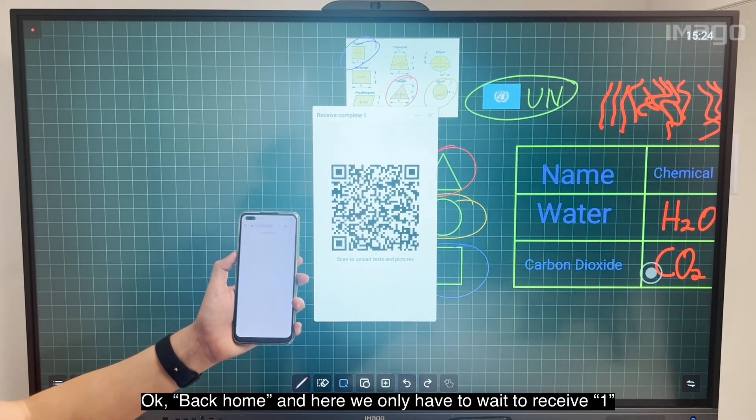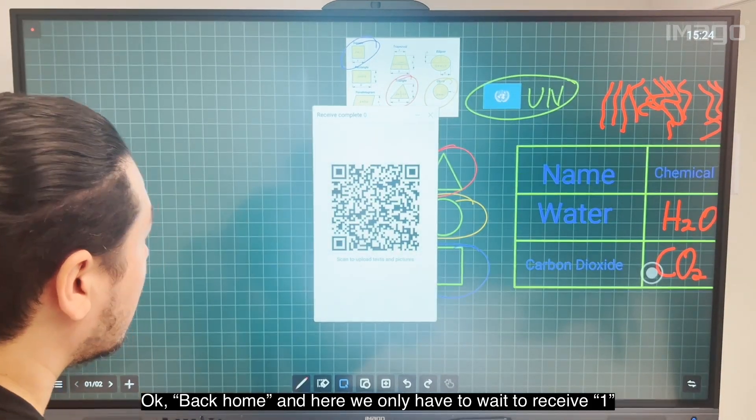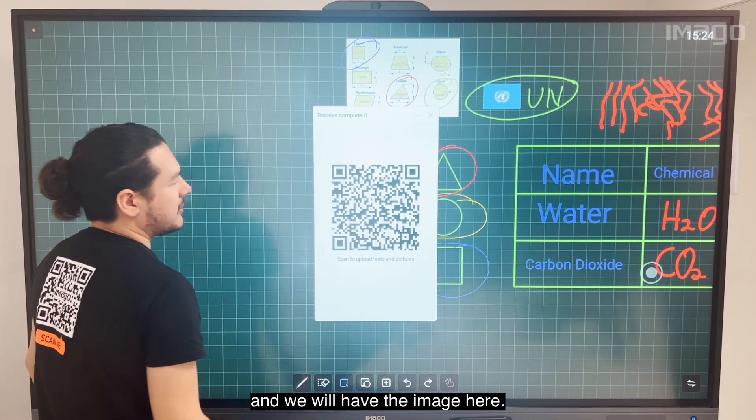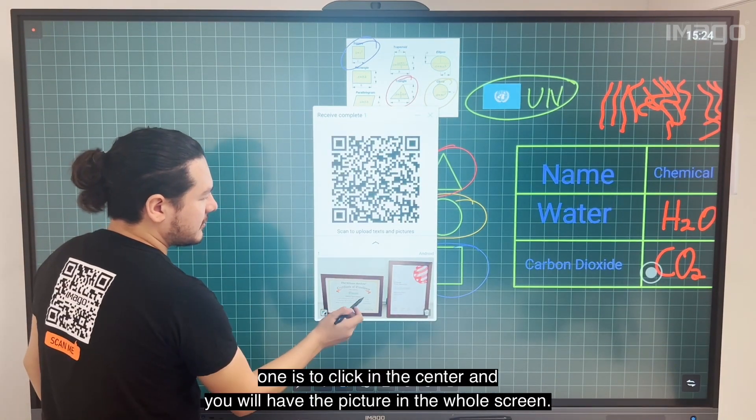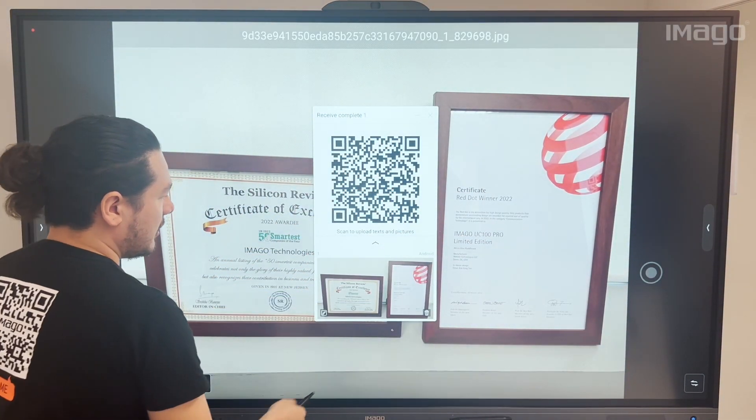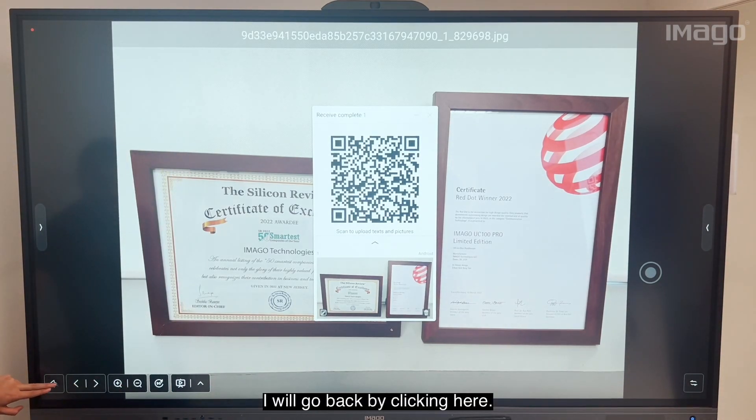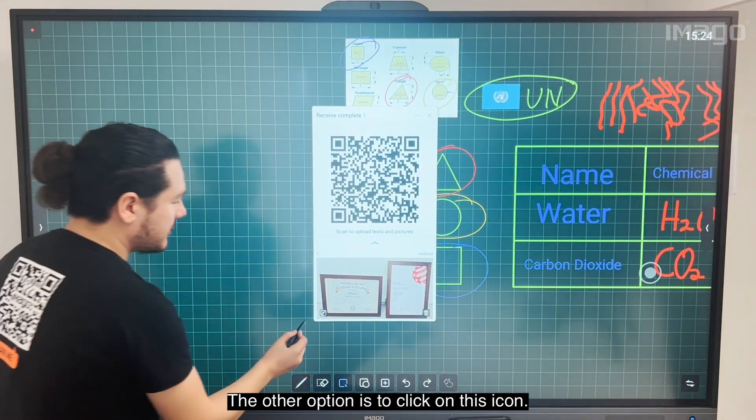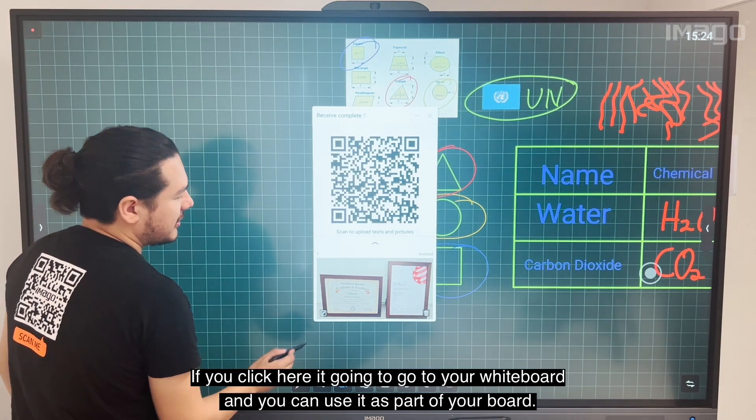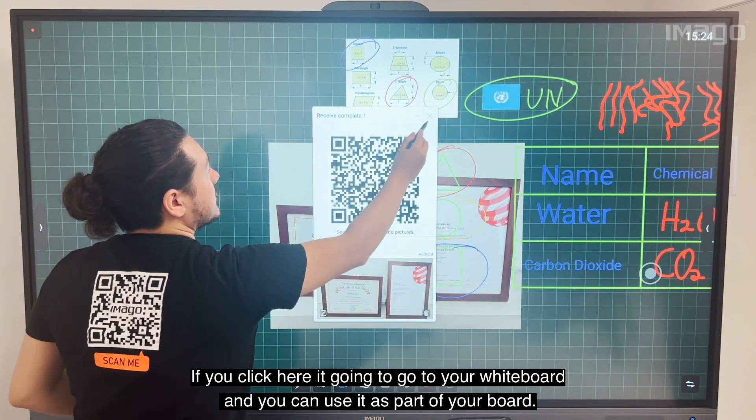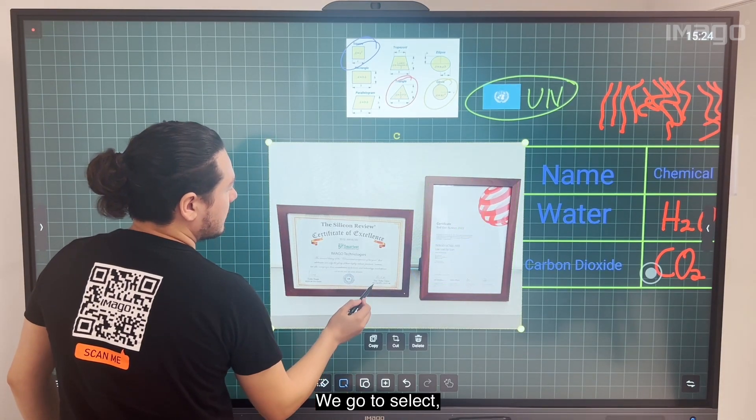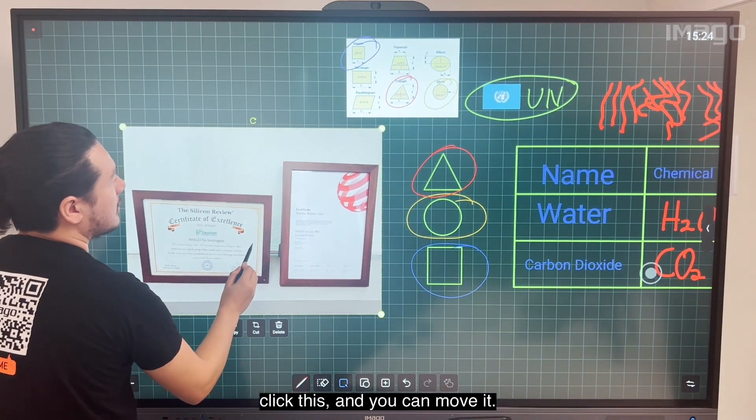Okay, back. Here we only have to wait to receive it, and we have the image here. There are two options: one is to click in the center and you will have the picture in the whole screen. I will go back by clicking here. The other option is to click this icon. If you click here it's going to go to your whiteboard and you can use it as part of your board. We go to Select like this and you can move it.